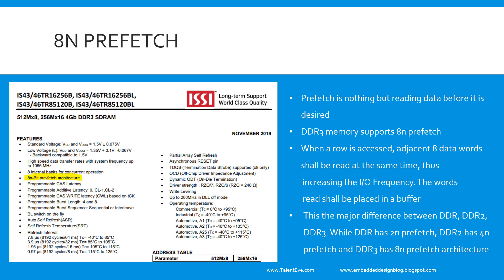When DDR3 accesses a row, it prefetches 8 data words at the same time and places them in a buffer. This means we are indirectly increasing the I/O frequency without actually increasing the clock frequency. This is the essence of the 8n prefetch in DDR3.